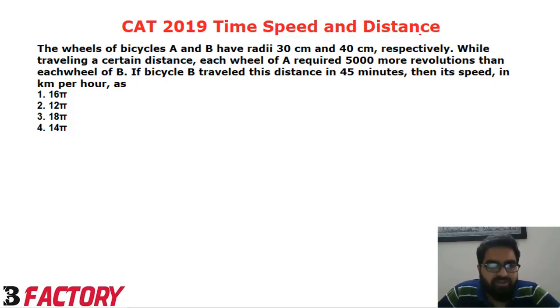This question states that there are two wheels A and B of a bicycle and they have different radii. Obviously, the number of revolutions made by those two wheels will be different. So in this particular question, we have to find the number of revolutions made by A or B.